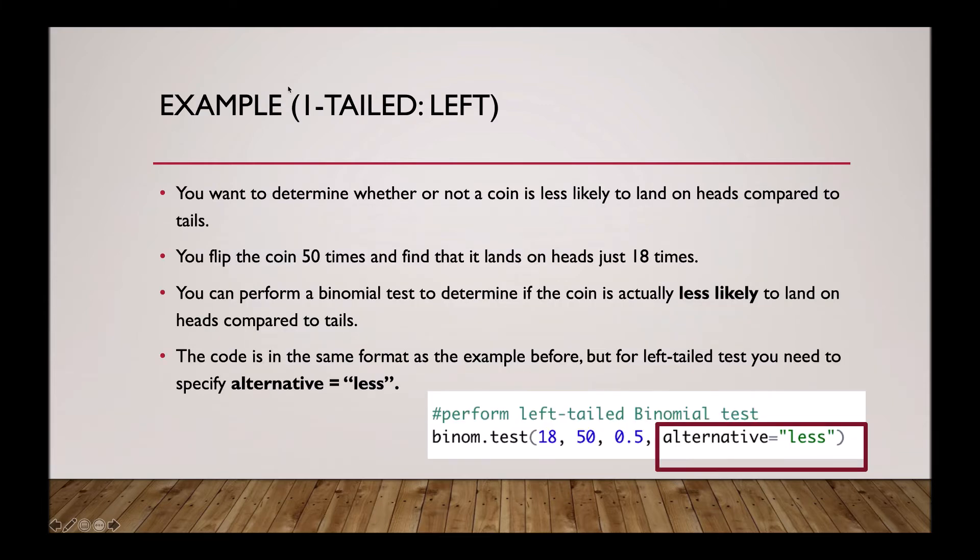Now we're going to move on to one-tailed tests. An example of a left-tailed test would be when you want to determine whether or not a coin is less likely to land on heads compared to tails. To do this, you flip the coin 50 times and find that it lands on heads just 18 times.